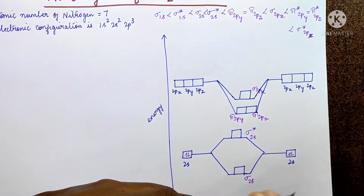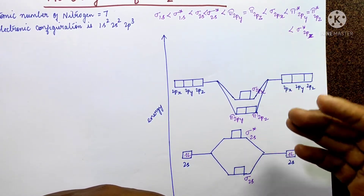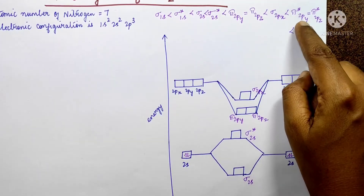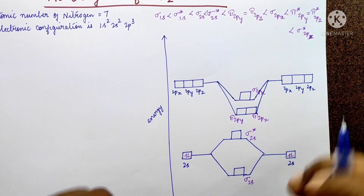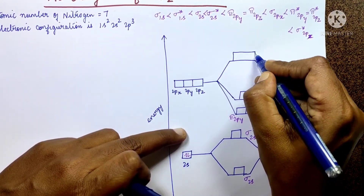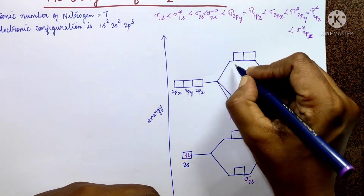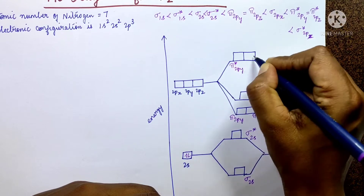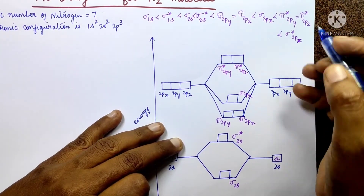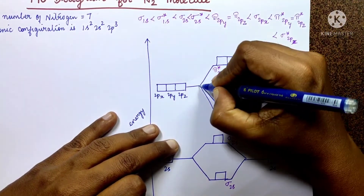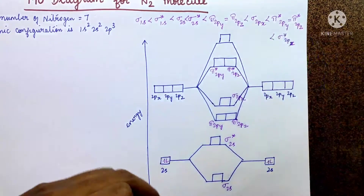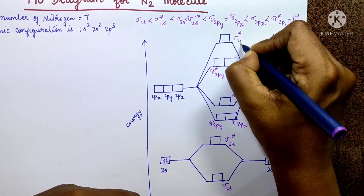Sigma 2px is an anti-bonding level at higher energy. Then pi* 2py and pi* 2pz are the next anti-bonding orbitals, which are of higher energy. The highest energy orbital is sigma* 2px, which is the highest energy anti-bonding orbital.